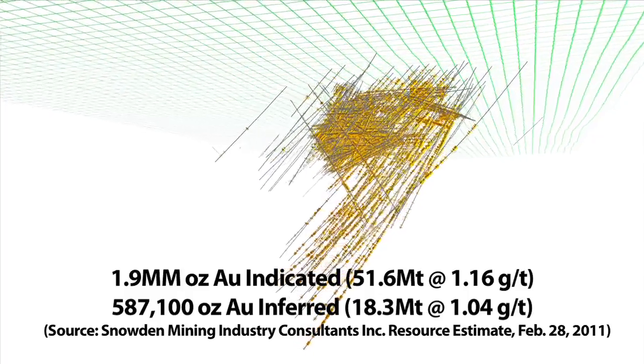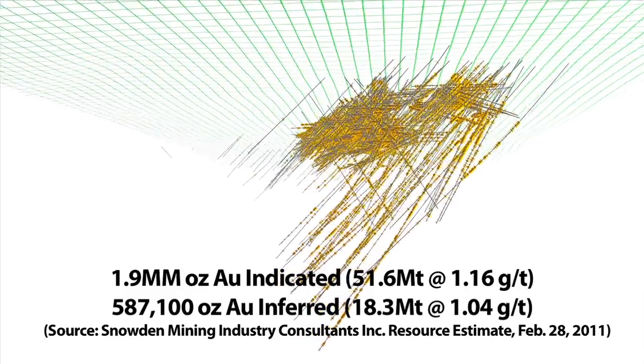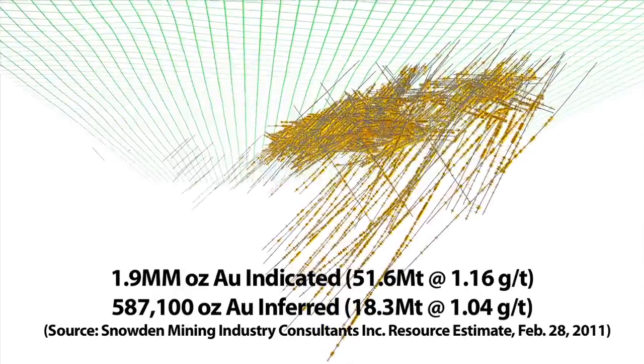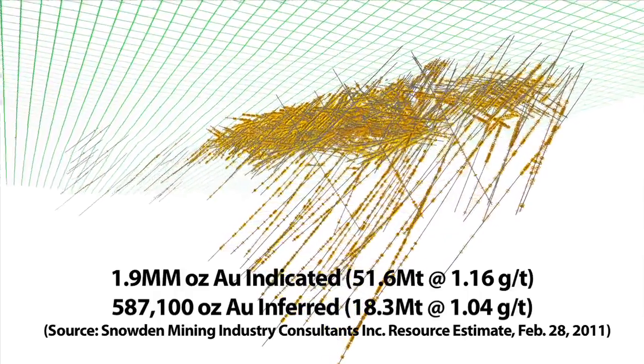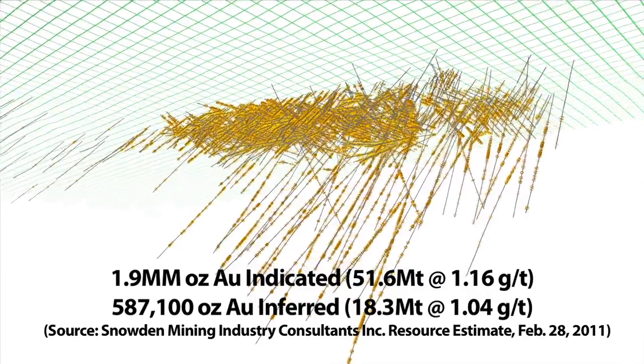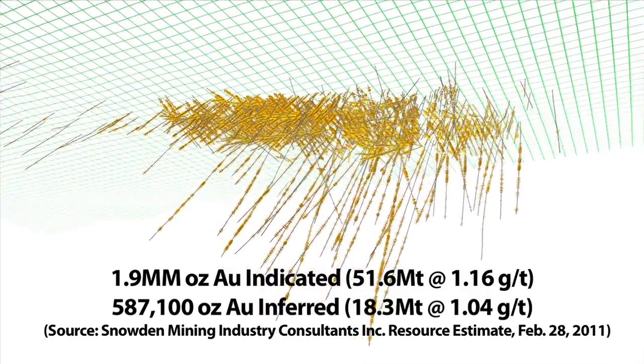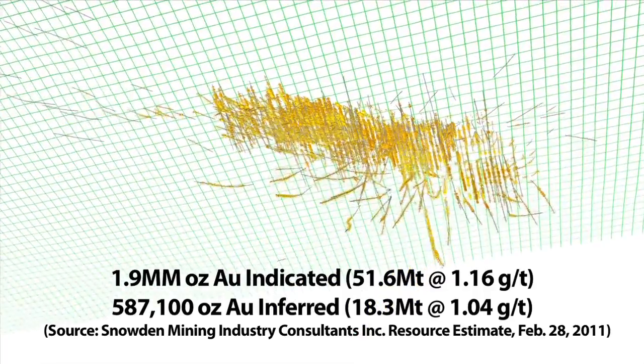Using a 0.35 gram per ton cutoff, the Magino deposit contains indicated gold resources of 1.9 million ounces, grading 1.16 grams per ton gold, plus 587,000 ounces of gold inferred, grading 1.04 grams per ton.